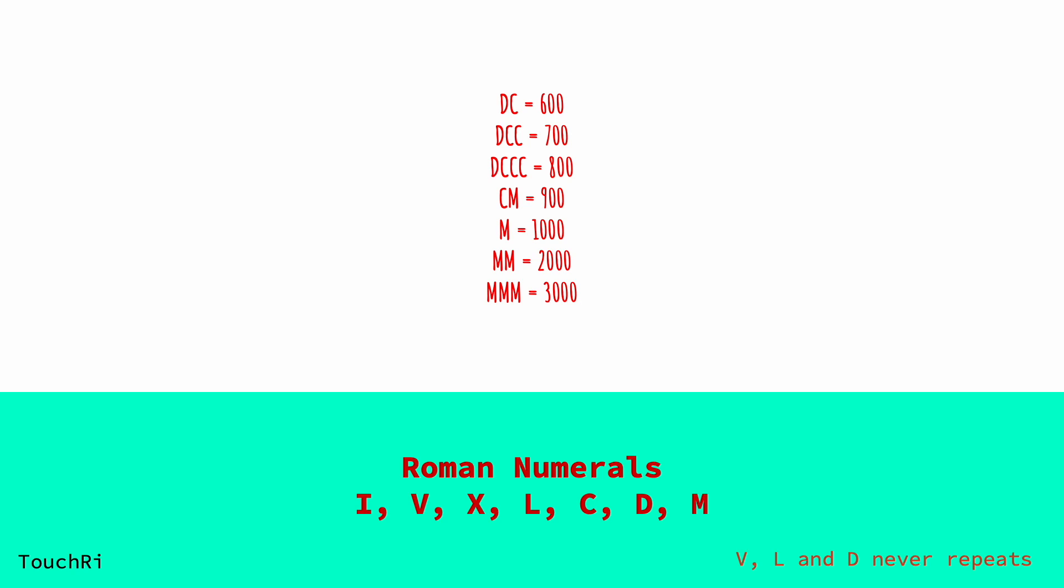Similarly, instead of LXX for 90, XC is used. These exceptions reduce repetition and make the numbers more concise.